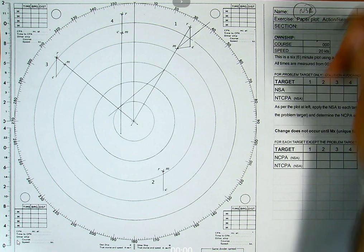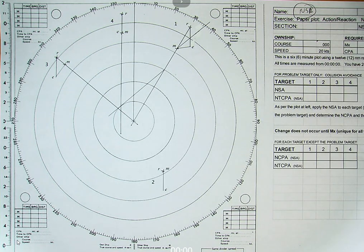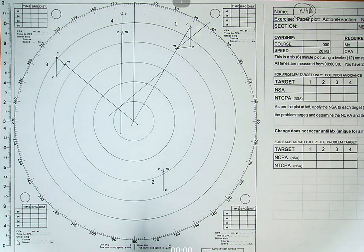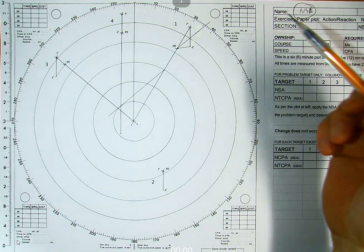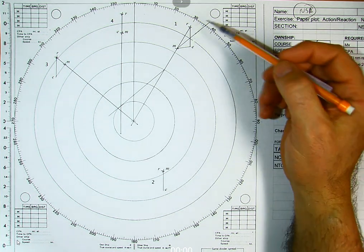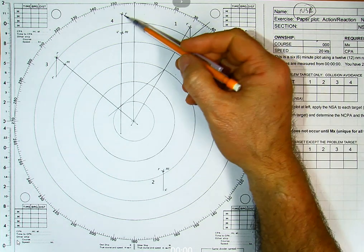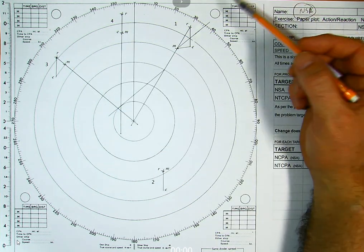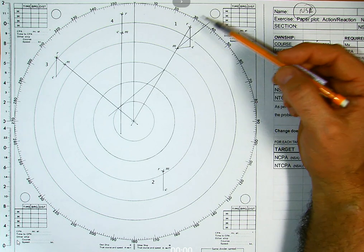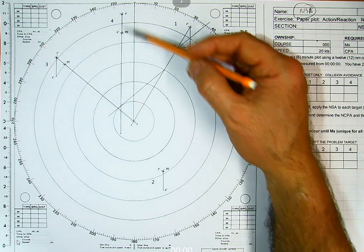This was the paper plot we did in lab on week 8, the week we got back from break. To do any of this action-reaction stuff, you start off as normal — you collect all your R's, plot your R's for all your targets, and while you're waiting the six minutes to get your M's, you plot all your E's.